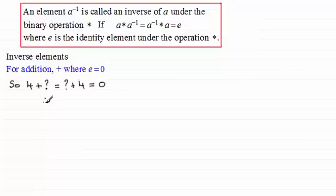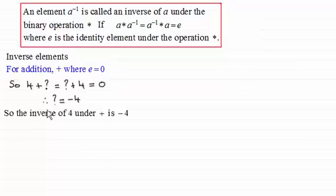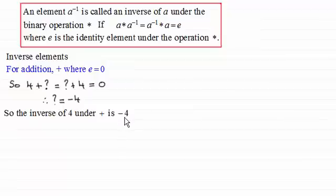Working out what the inverse of 4 is, it's got to be minus 4. 4 add minus 4 gives 0. So the inverse of 4 under addition is minus 4. If we take any real number under addition, its inverse will be the negative of that number. So if you had a, the inverse of a under addition is minus a.